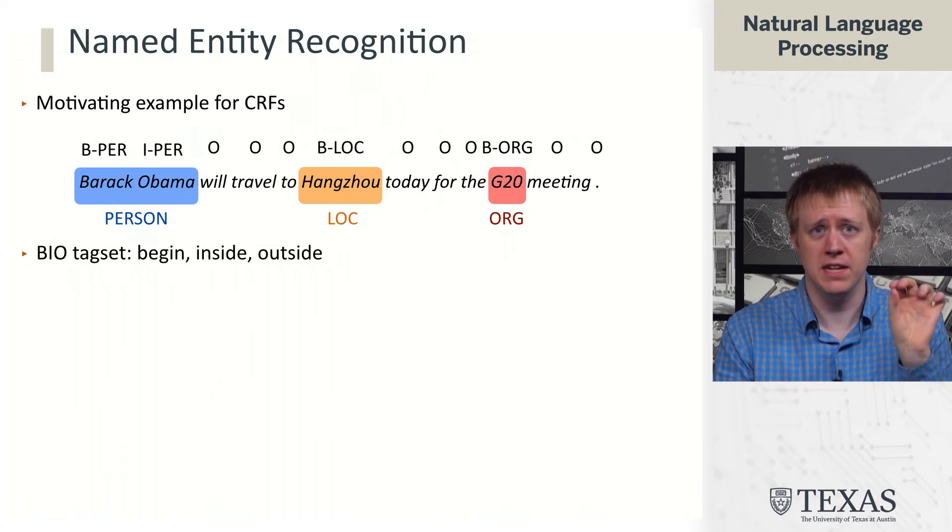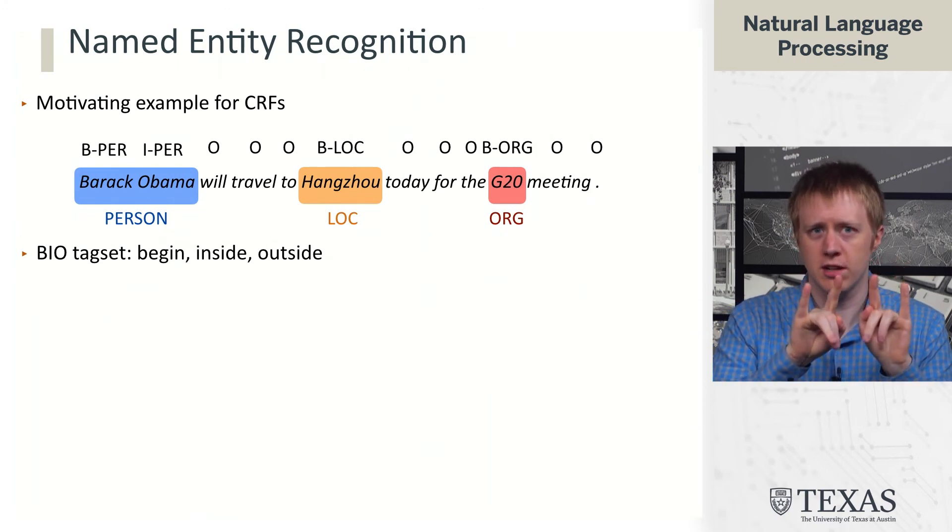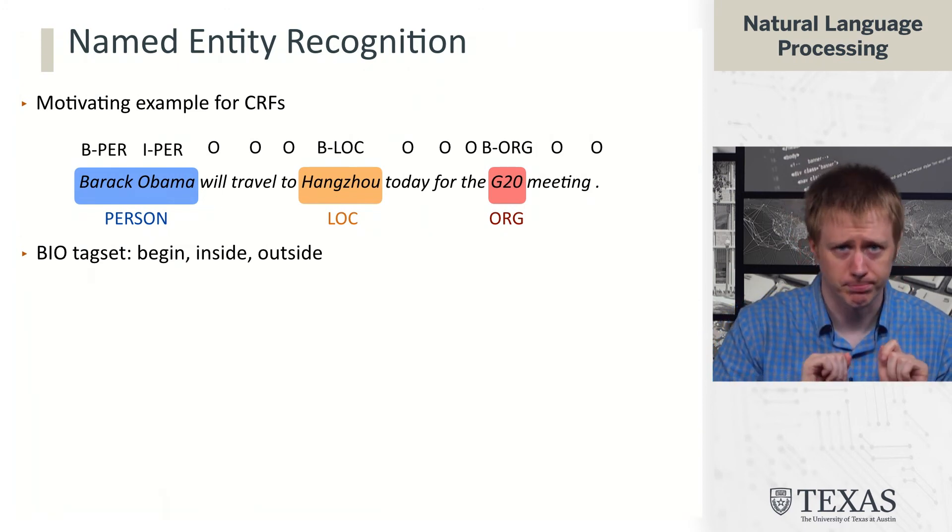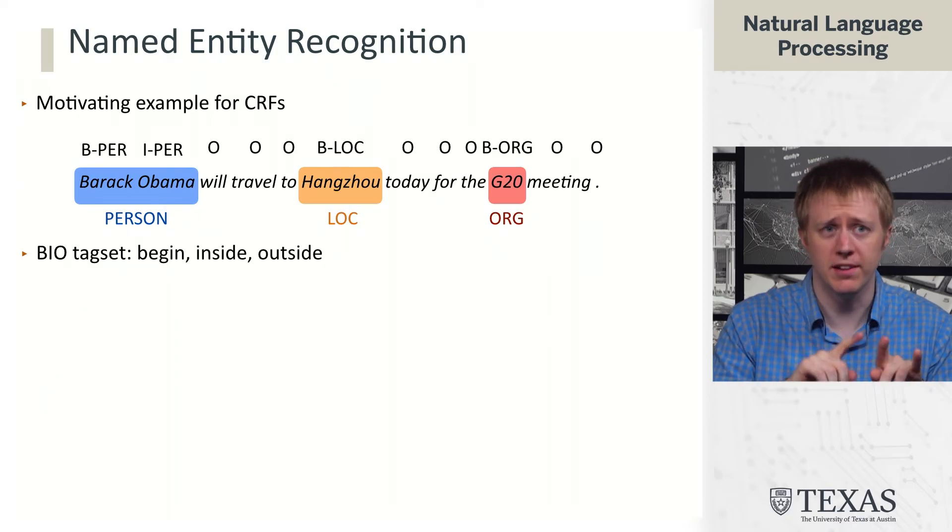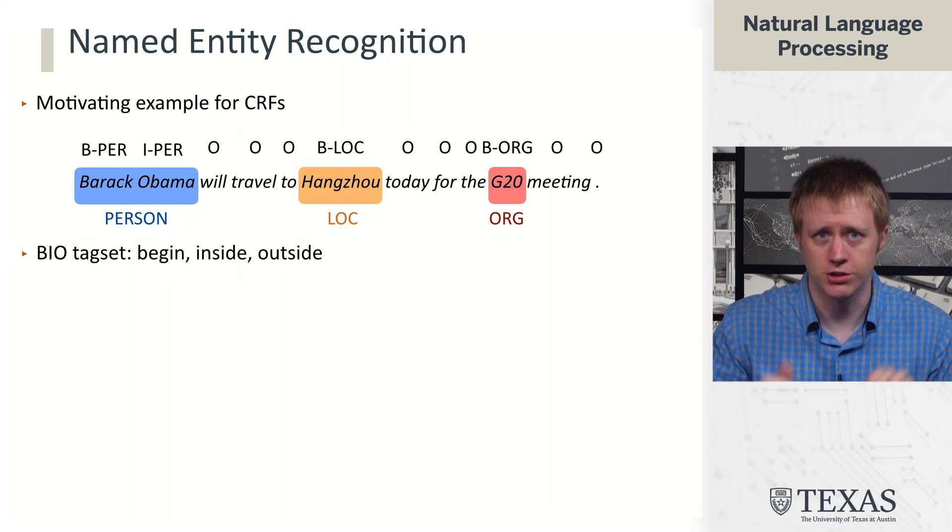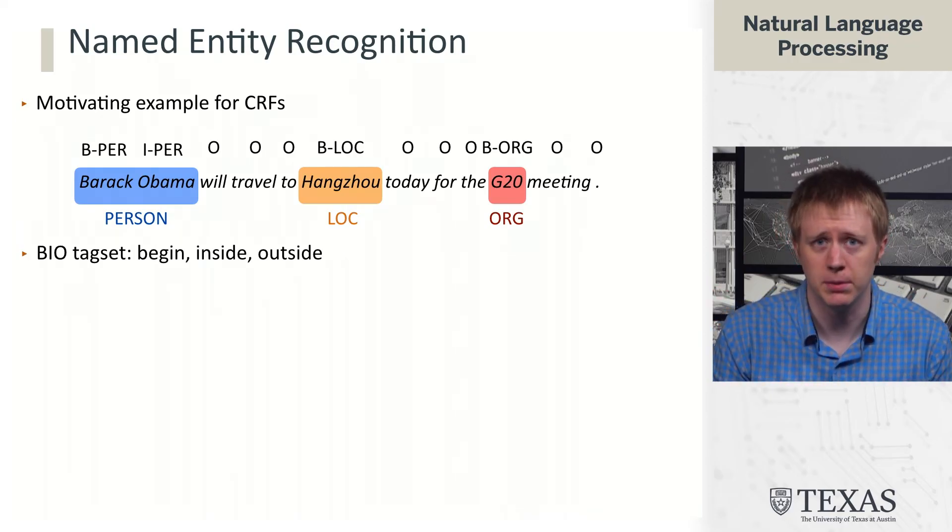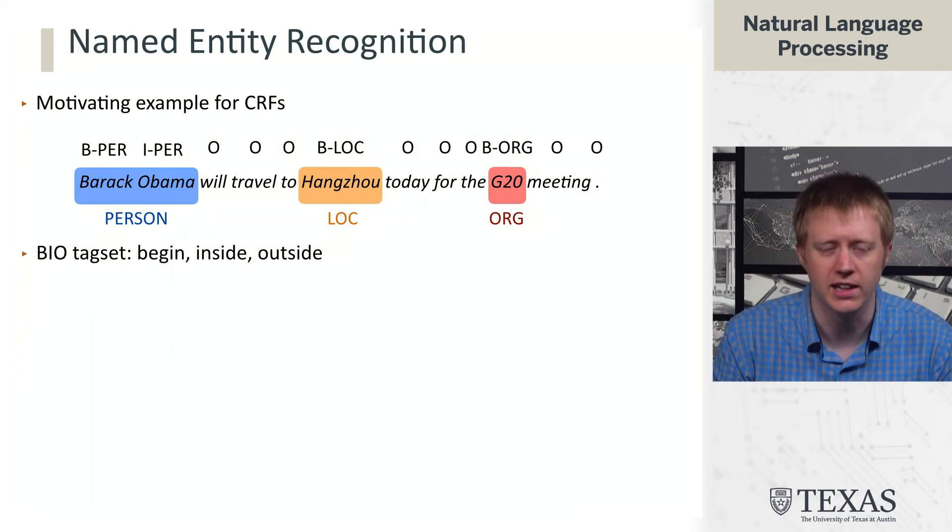Now if we had B-per, B-per, what that would be saying is that Barack and Obama are two separate person chunks that just happen to be next to each other. So we can encode basically chunks that are next to each other or long chunks by continuing with I's, and then we have B-loc and B-org, and then O just means not in any chunk.